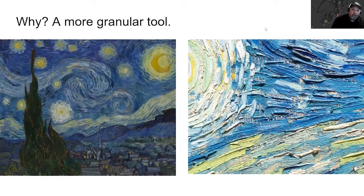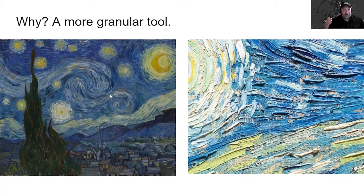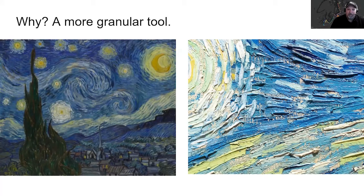Why is this important? I like to think about it this way: if you're in the Louvre in Paris looking at a Van Gogh, standing back you get to see the big picture and the beauty of what he's bringing to the canvas. But when you're actually there, unlike looking at a print, you can also walk up to it and see the details — a more granular view of the brush strokes, and really get a feel for what a specific area of the painting looks like.